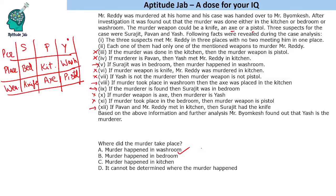So this is how we solve it: we find the true statements. The one true statement given is that Yash is the murderer. From that we linked other statements — out of 12 statements, numbers 1, 2, 3, and 4 were applicable. Only when the if-part is true do we check the condition; if the if-part is false we ignore it. We found Surajit in the bedroom, murder in the washroom, and axe in the kitchen.